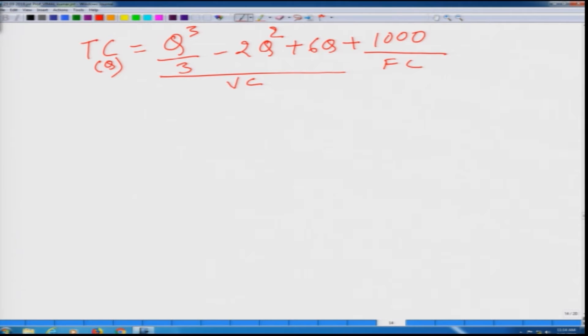If we are familiar with the rules of calculus, we can differentiate this total cost function with respect to q and obtain marginal cost. So the marginal cost is going to be 3q to the power 2 divided by 3 when you differentiate q cube, then you get 3q square minus 4q plus 6, which is basically q square minus 4q plus 6. And this we can write as q minus 2 square plus 2.